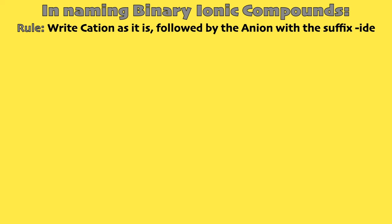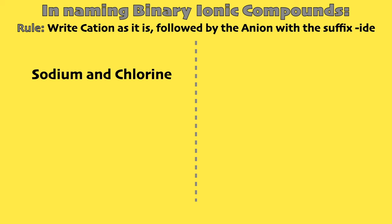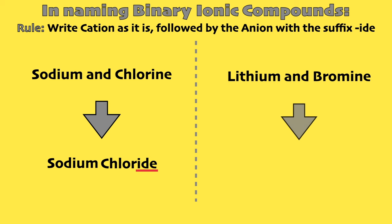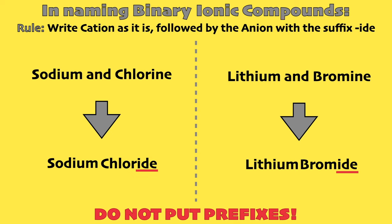In naming binary ionic compounds, the cation is written first followed by the anion, but we put the suffix -ide. In the case of sodium and chlorine, we first write the cation sodium as it is, followed by the anion bromine with the suffix -ide, so it becomes lithium bromide. Take note that we do not put prefixes.